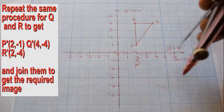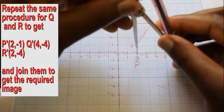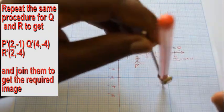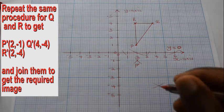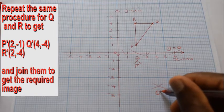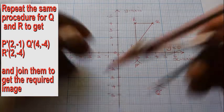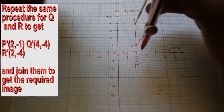Repeat the same procedure for the object points Q and R to obtain the images Q' and R' respectively.